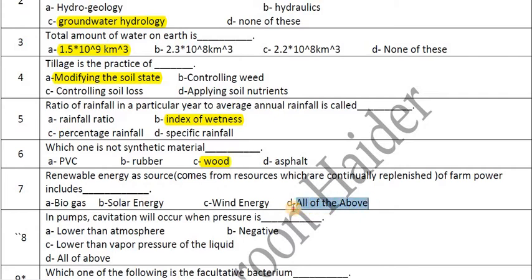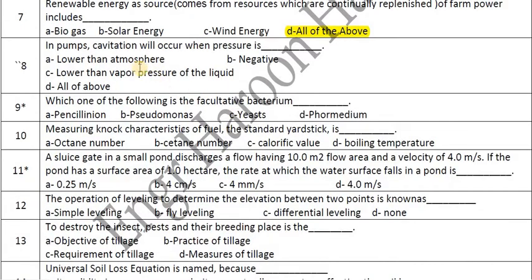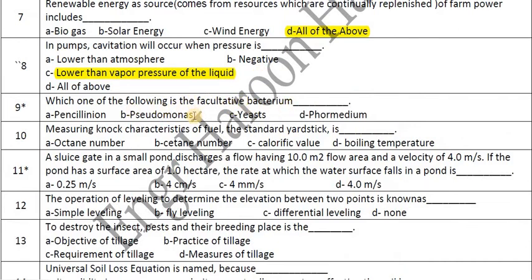In pumps, cavitation will occur when pressure is lower than the vapor pressure of the liquid. Pseudomonas is the facultative bacteria. The standard yardstick for fuel characteristics is the octane number.